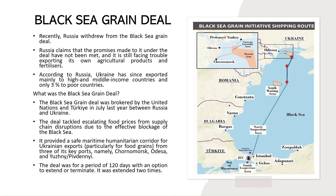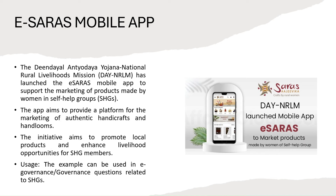Russia's withdrawal from the deal has introduced a new layer of complexity. According to Russia, a significant portion of Ukraine's wheat exports from the deal went to high and middle-income economies, with only a minimal percentage reaching poor nations. This has fueled contention and added a diplomatic dimension to the Grain Deal. As the Black Sea Grain Deal undergoes this diplomatic evolution, the global grain market finds itself at a crossroads, and the repercussions of this withdrawal are yet to unfold.